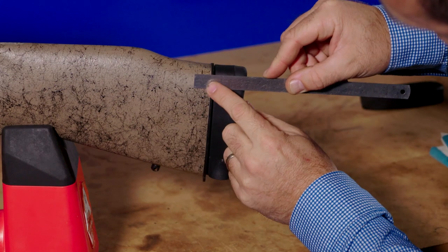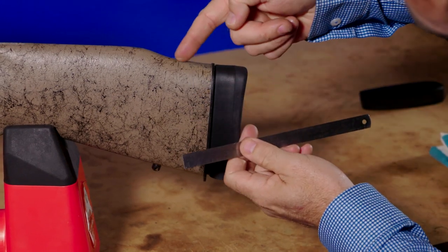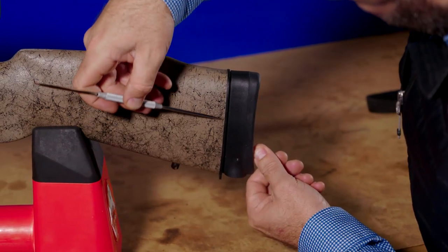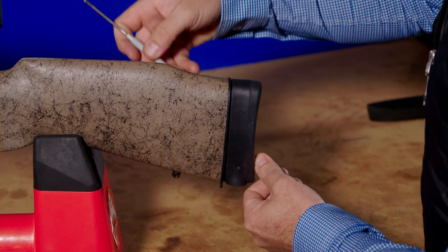Check alignment of the ZP1 main body and recoil pad with top of rifle stock and adjust position if necessary. Once happy with alignment, use a scribe to mark the adapter plate ready for shaping.